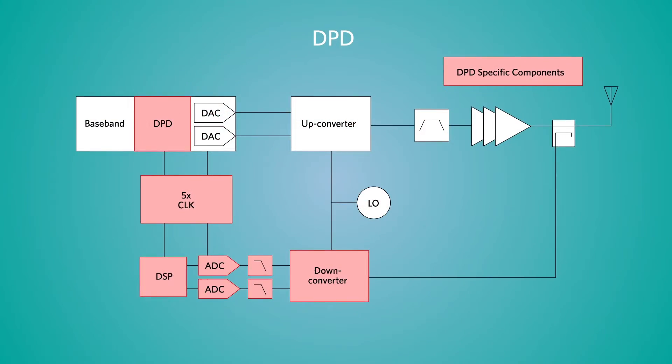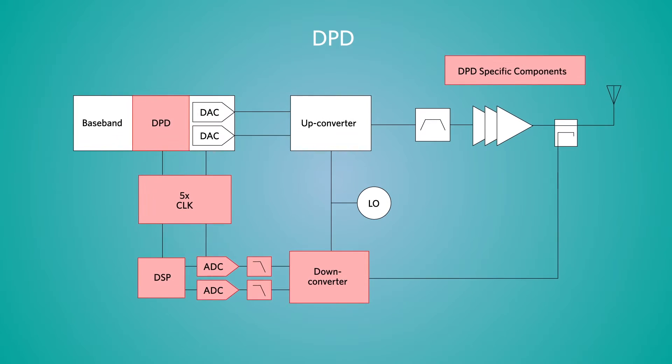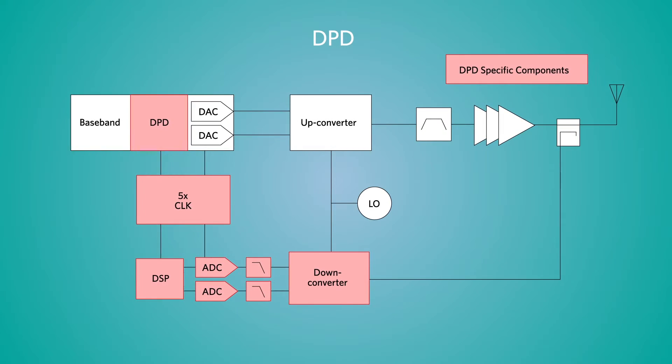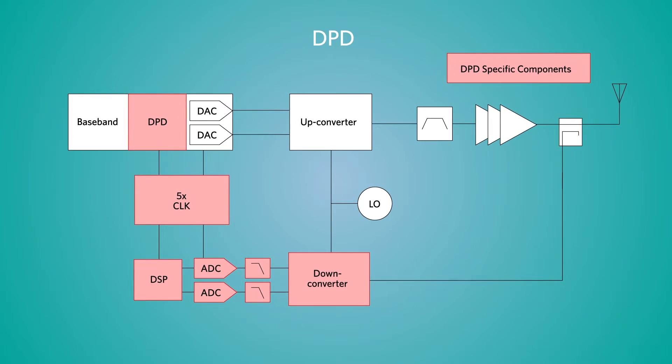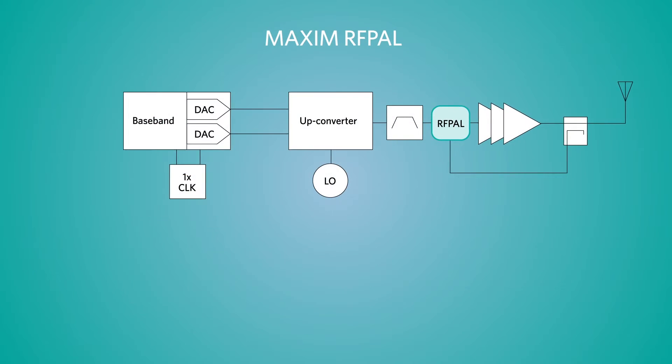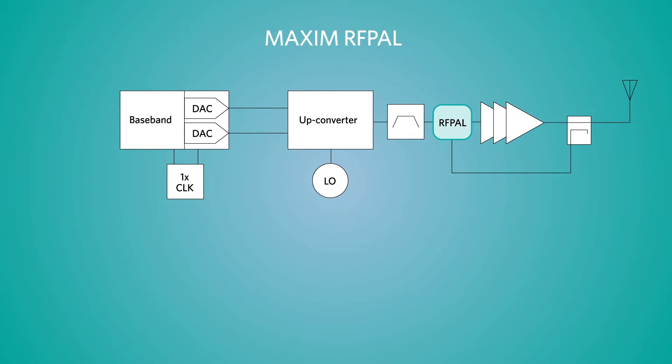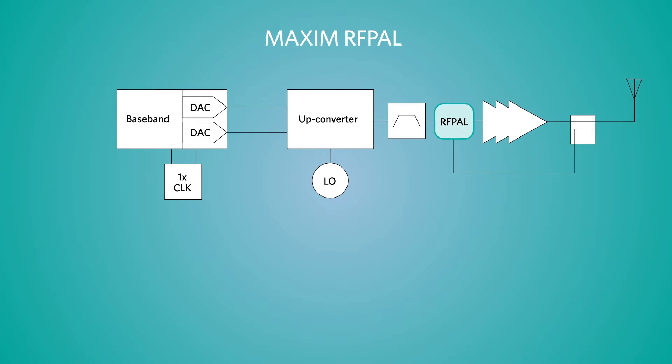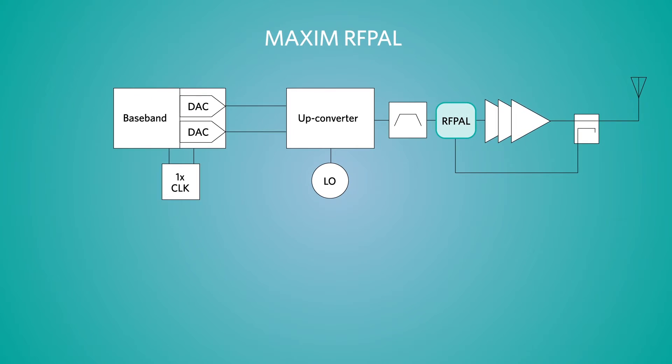As illustrated in this DPD block diagram, the system includes several high-cost components which are eliminated by injecting Maxim's RFPA linearization technology at the input of the PA. This results in up to a 50% reduction in BOM cost, making it the lowest-cost option for SISO and MIMO systems.